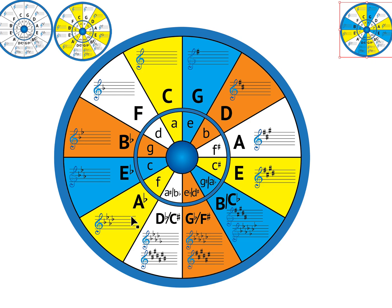Augmented chords don't happen diatonically in a major or minor key — they do happen in the harmonic minor, and I tend to do some videos on harmonic minor later. Because this chord breaks up the chromatic scale symmetrically into three notes, there are four augmented chords. Each one can be the root, so a C, an E, and an A flat augmented chord all contain the same three notes, and all the notes of each chord are separated by a major third. C to E is a major third, E to A flat is a major third, A flat back to C is a major third — the whole thing is a series of major thirds.